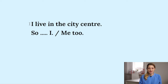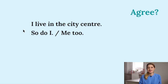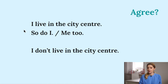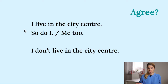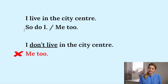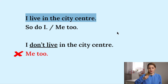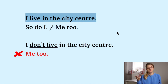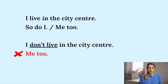If you have 'I live,' this is about the present state — present simple. So you will agree and say 'so do I.' But if someone tells you 'I don't live in the city center' and it is also true for you, you cannot say 'me too.' Me too is about the positive, the affirmative statement — meaning 'I live,' not 'I don't live.' I like something — me too. But we cannot say 'me too' for a negative statement.